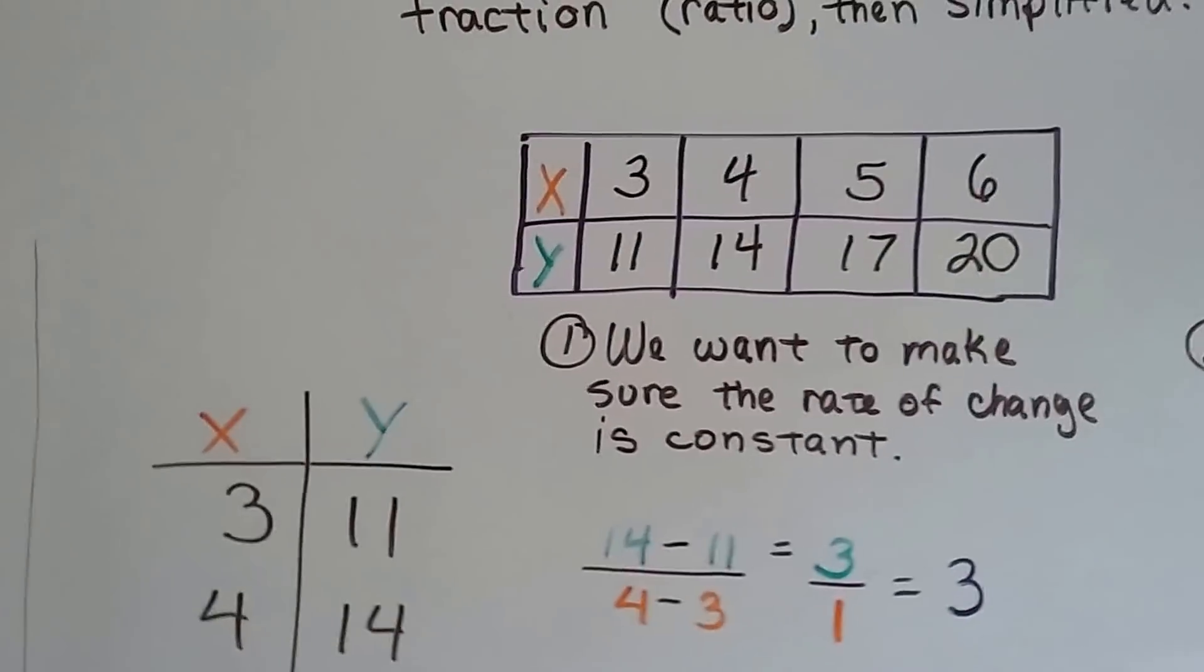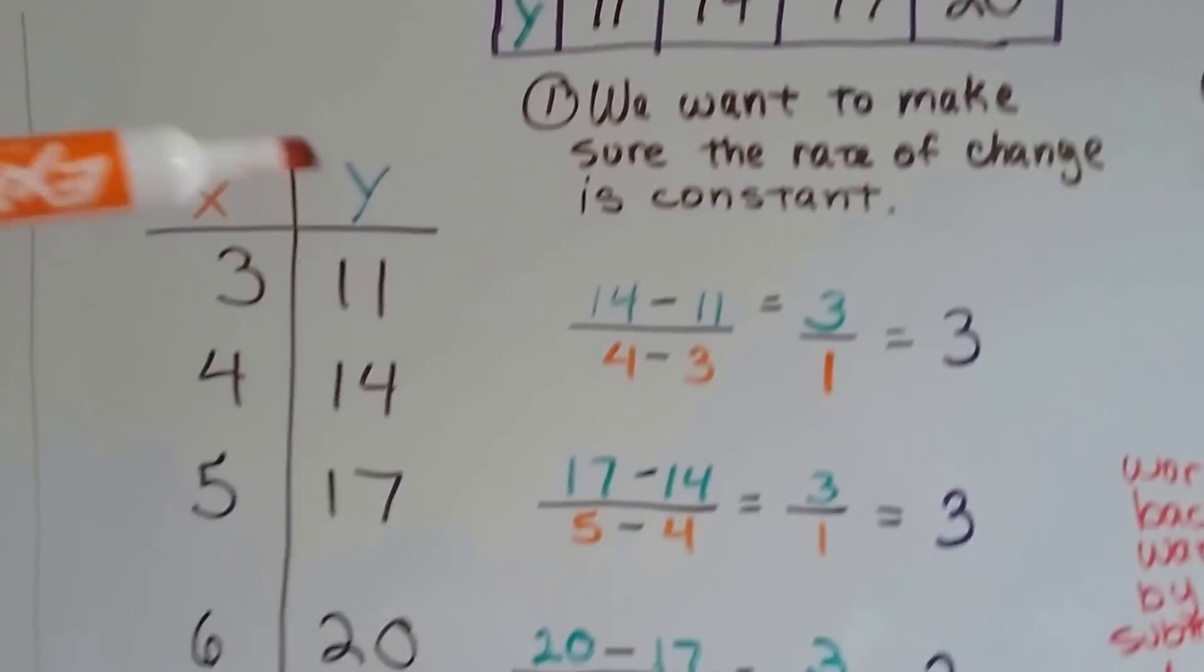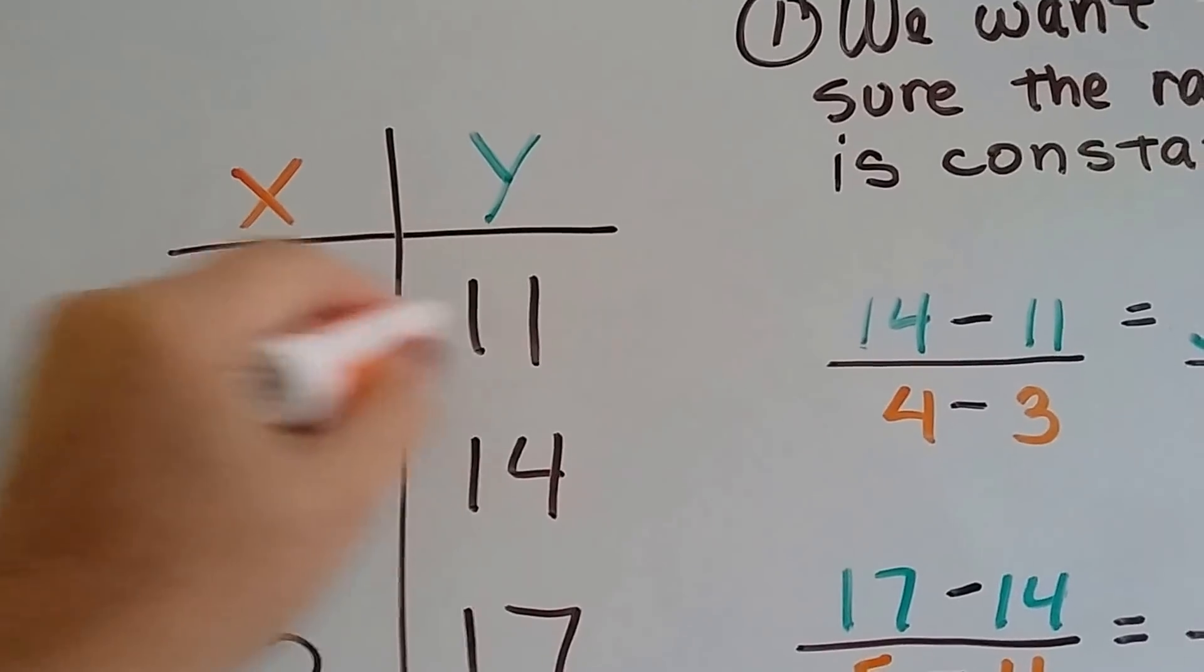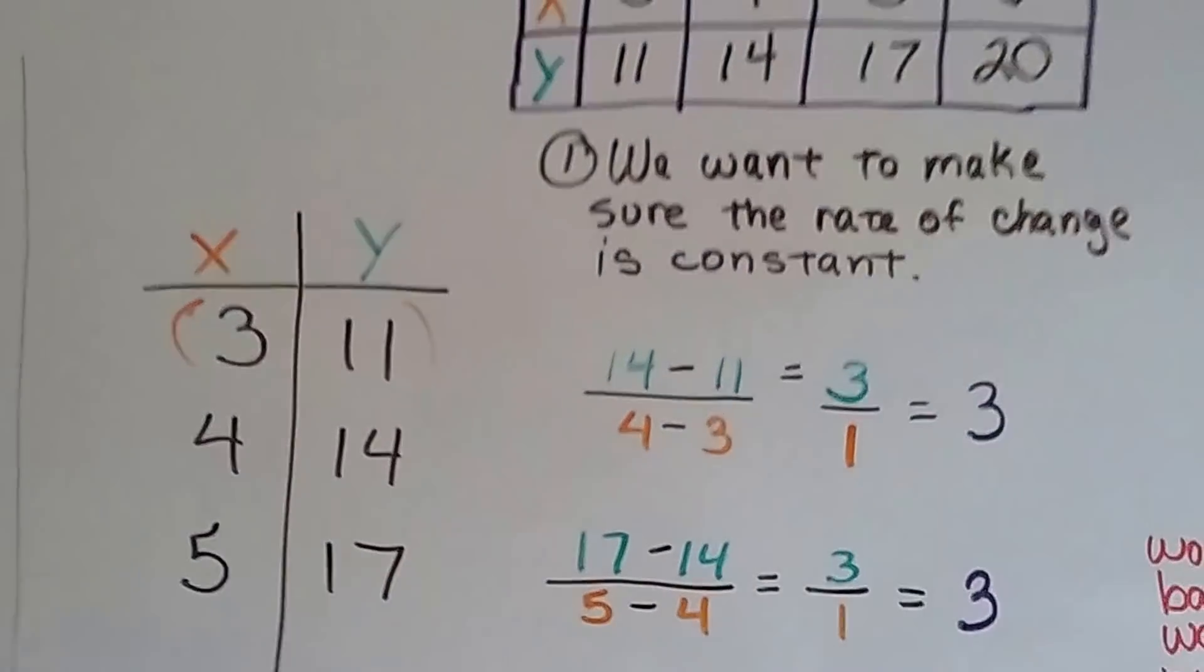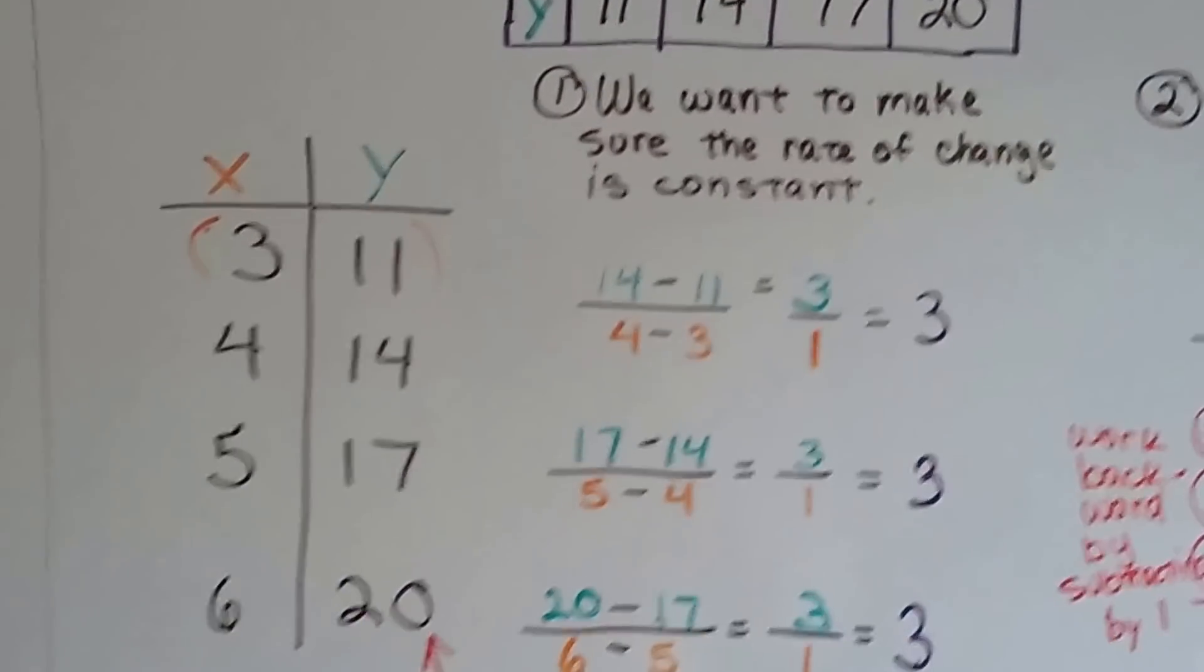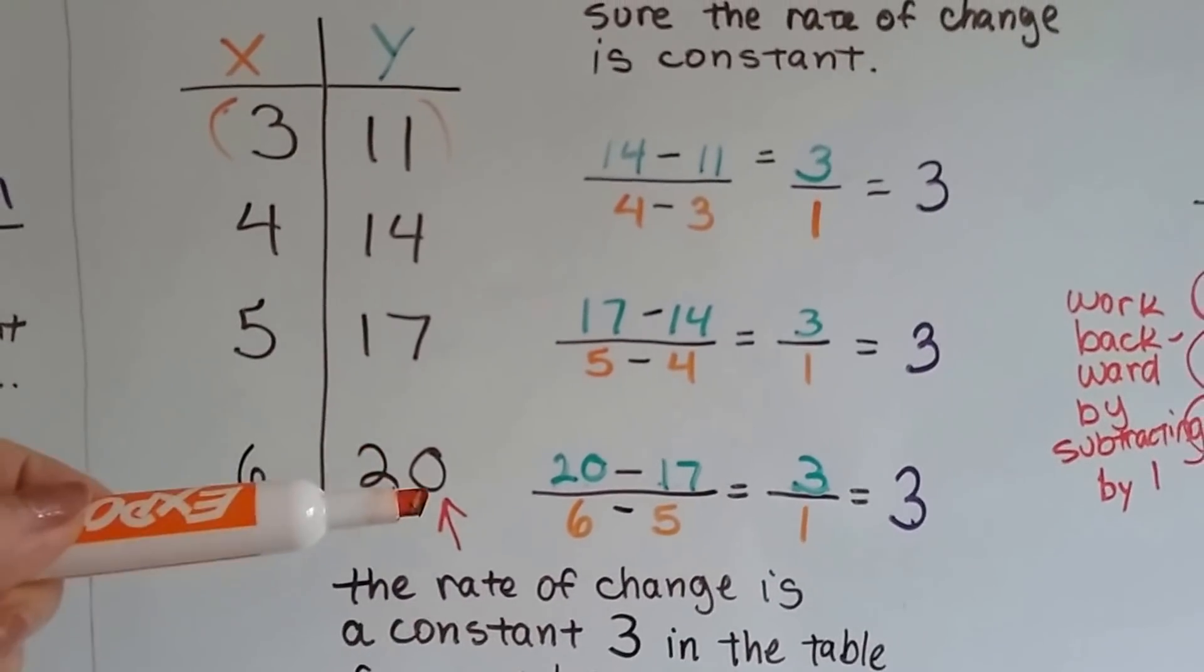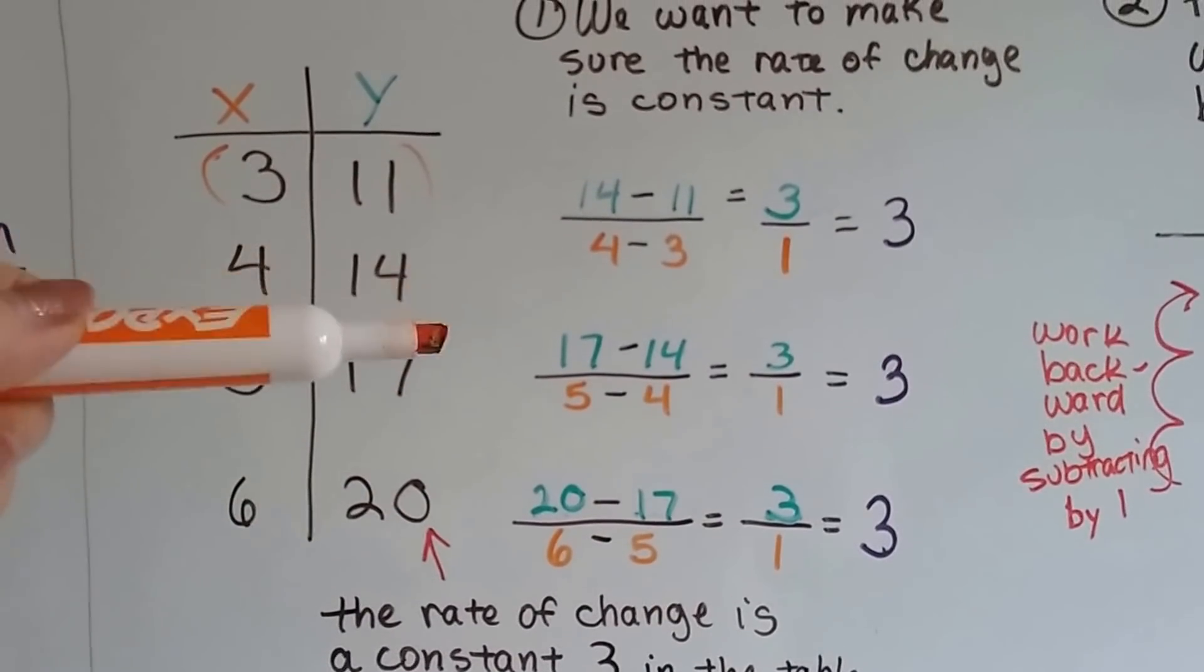So I know you're used to seeing tables written horizontally like this, but this is easier because you can actually see the ordered pair. You can just put them in parentheses and see that's an ordered pair. Well, what we want to do before we do anything is make sure our rate of change is constant. So we compare these to these, and these to these and these to these.